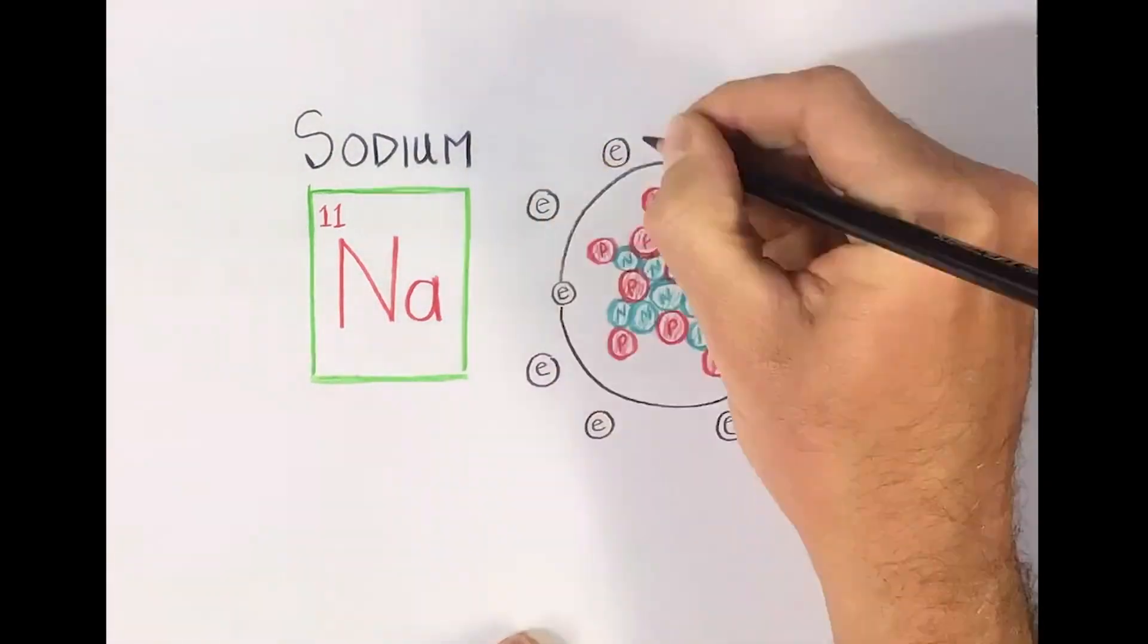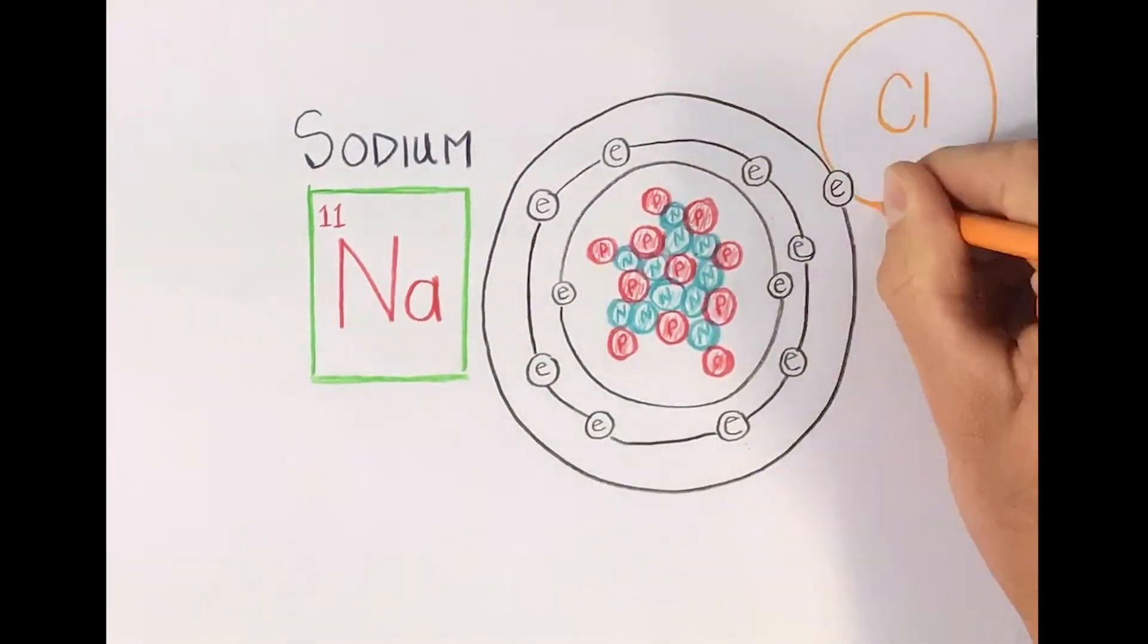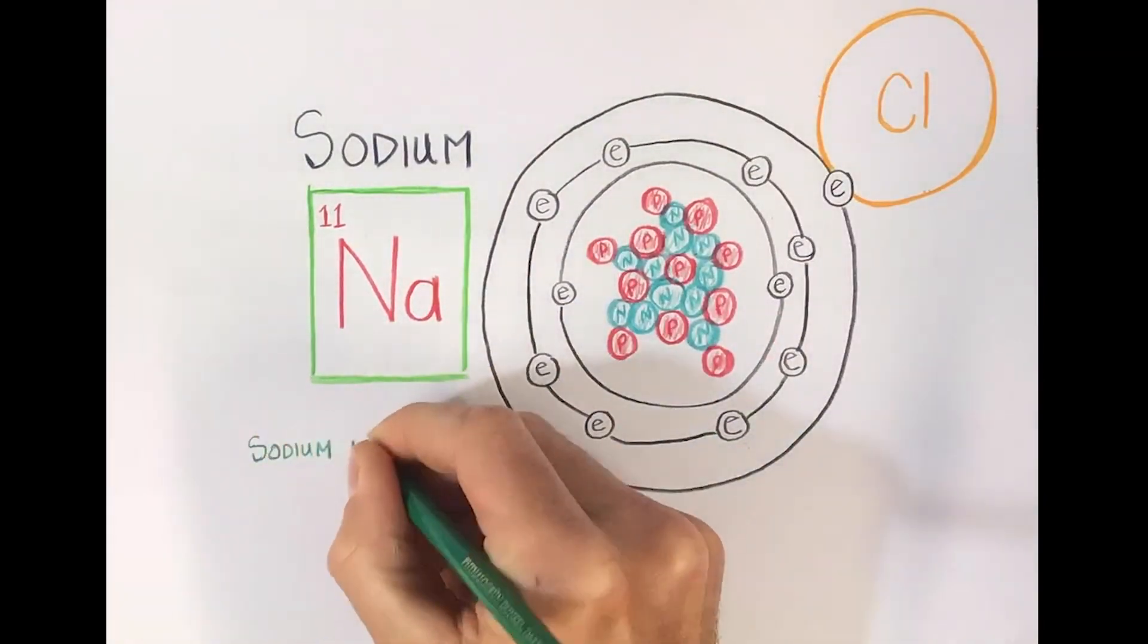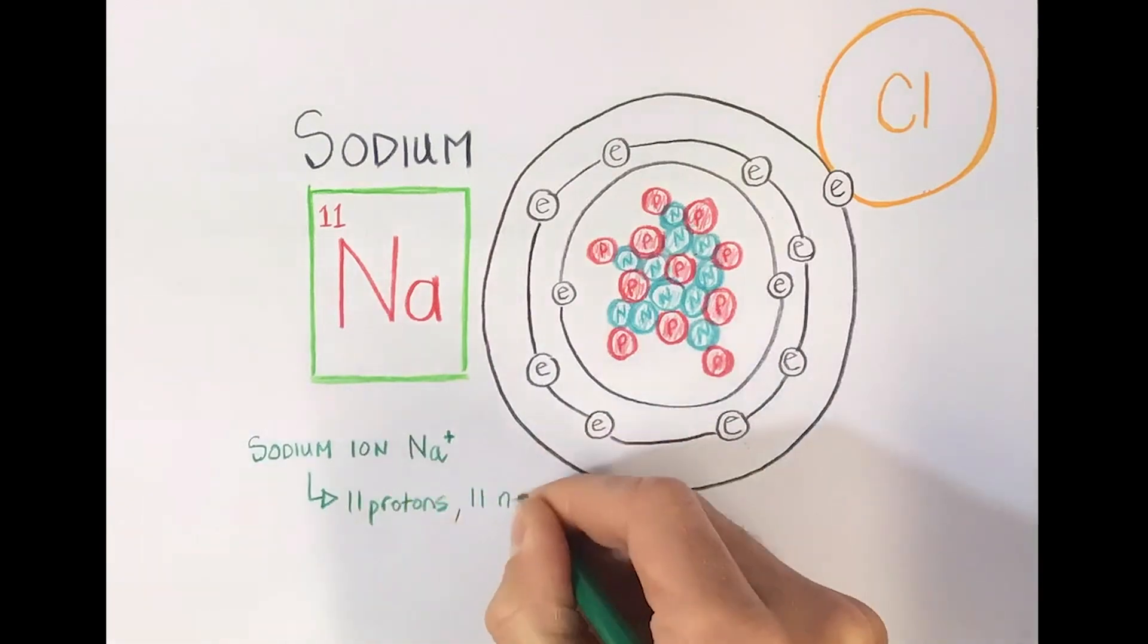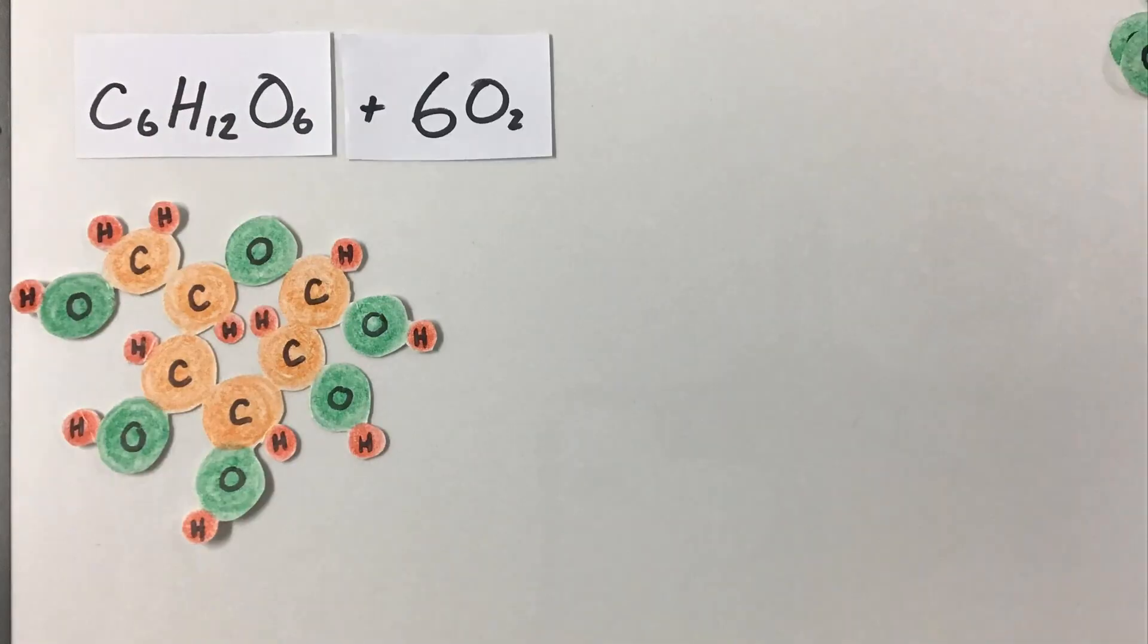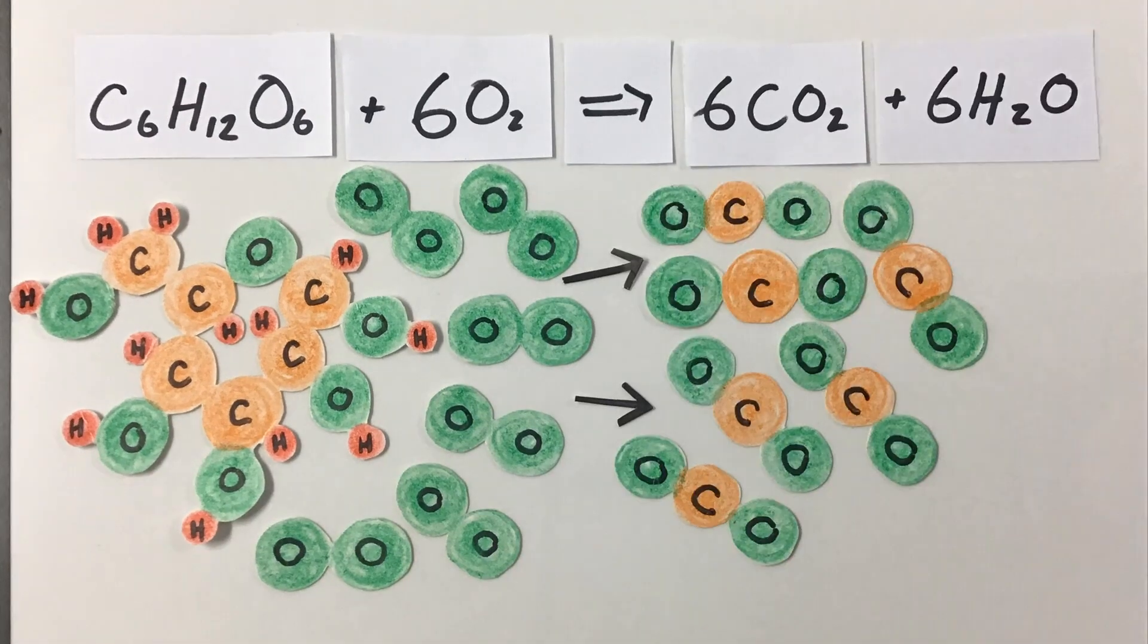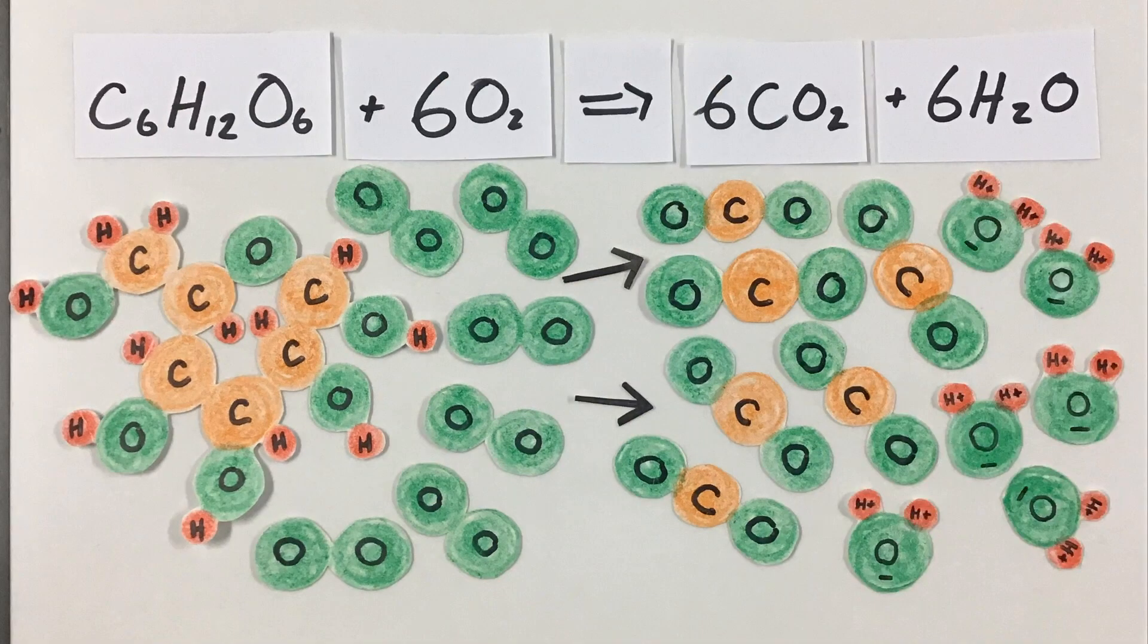These two elements combine to form an ionic bond, which you know as table salt. When dissolved in water, salt will break into the sodium ion and the chloride ion, which are positively and negatively charged, respectively. Lastly, I just want to point out that in any chemical reaction, matter is never created or destroyed. It's simply rearranged into different atoms and molecules.